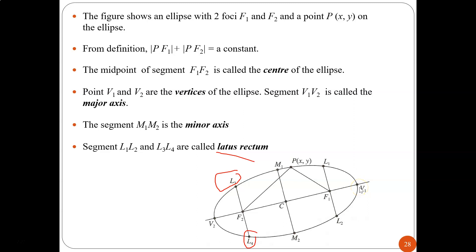Segment V1V2 is called the major axis — the longest one. Segment M1M2 is the minor axis, the shorter one, crossing the center. Segments L1 to L2 and L3 to L4 are called the latus rectum. These cross the ellipse near the foci but not at the middle.